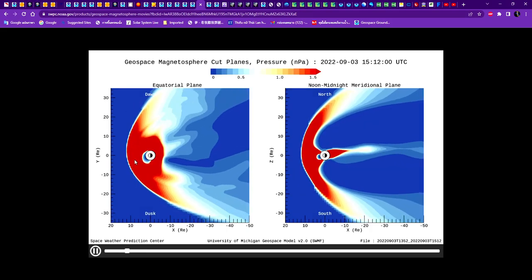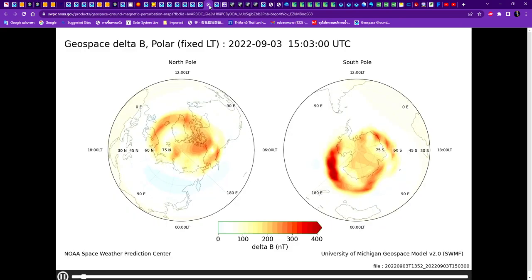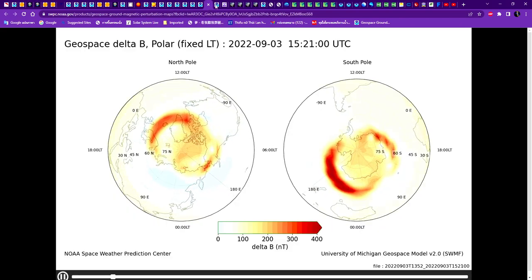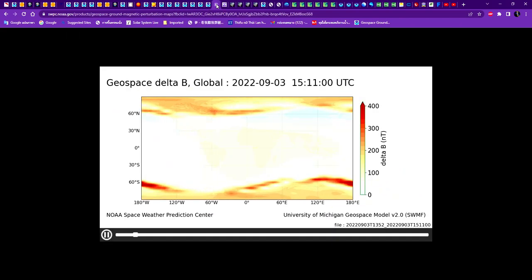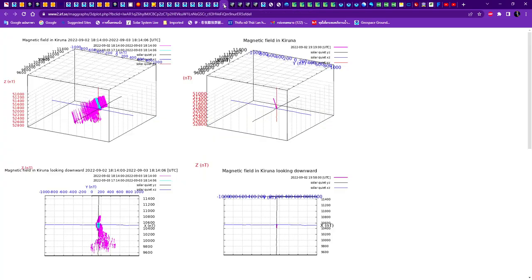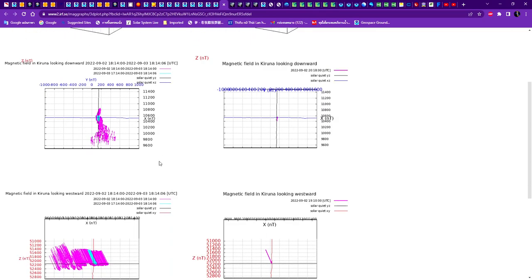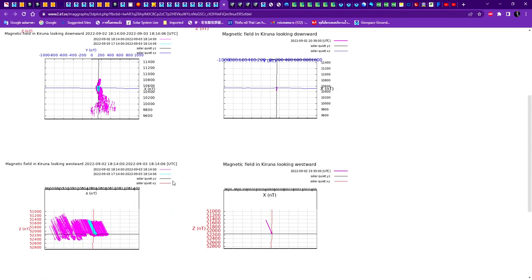You can see that all very dark red at the north pole, south pole, even right here now. That's why many people feel not comfortable. Look at here, most of them on the south, downward and the west.